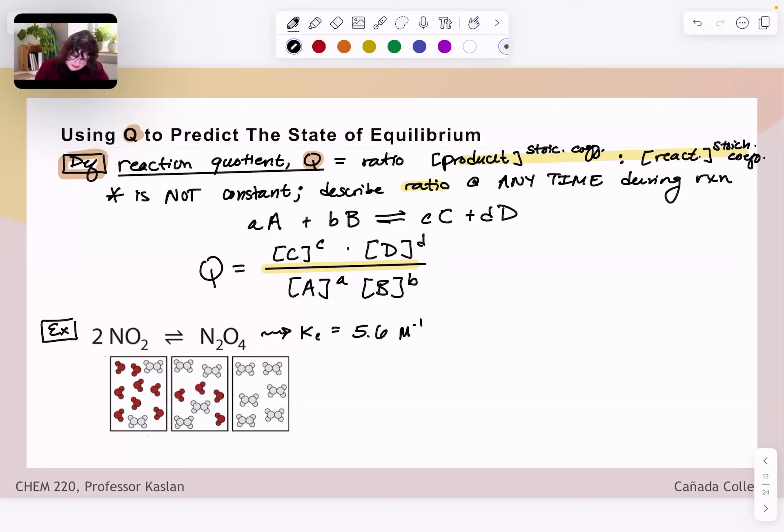And again, the thing that makes this unique and distinct from the reaction equilibrium constant is this is our proportion at any given time in the reaction. So the reaction equilibrium constant is only for when we are at equilibrium.